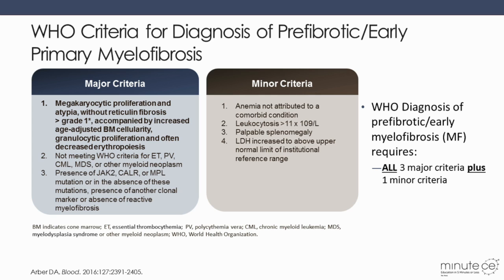Of course, we need to exclude any other disease entity that may cause this problem, and we should look for the presence of JAK2, calreticulin, or MPL mutations, which are usually exclusive of each other and present in about 90% of patients. Minor criteria exist as well, and along with the mandatory three major criteria, we should look for at least one minor criterion to make a diagnosis. The minor criteria include anemia not attributed to a comorbid condition, slight leukocytosis over 11,000, palpable splenomegaly, and LDH increased above the upper normal limit of the institutional reference range.